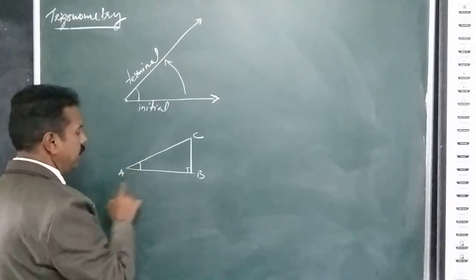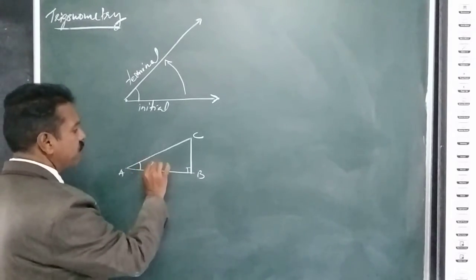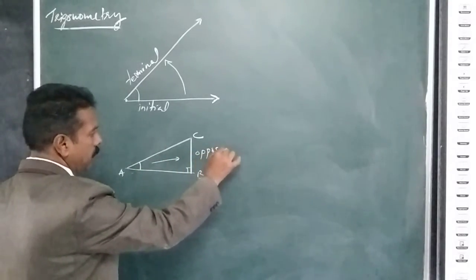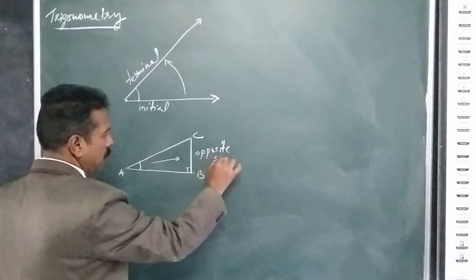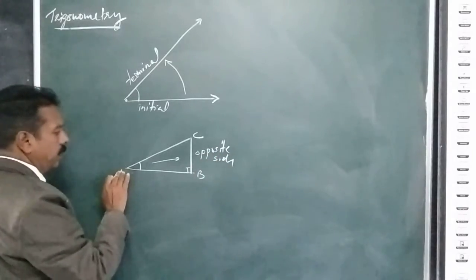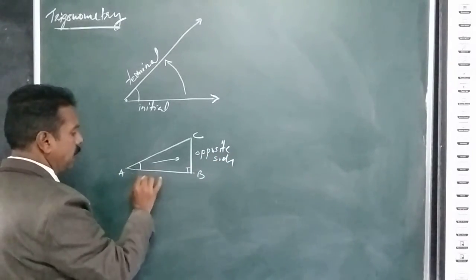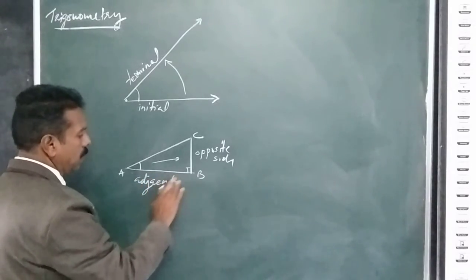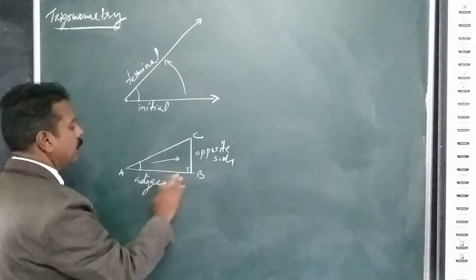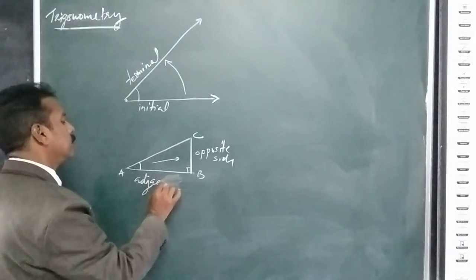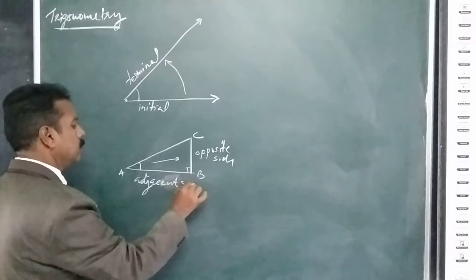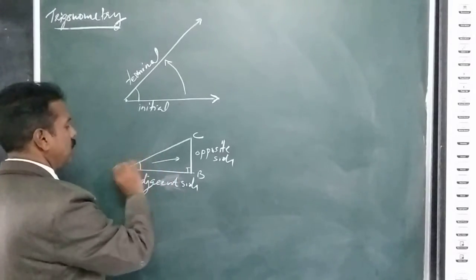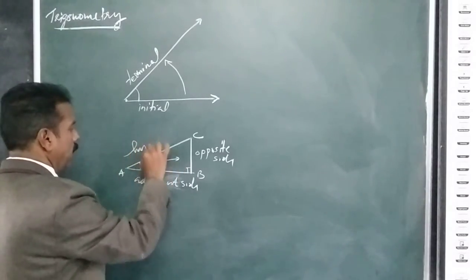The angle is called angle A. The opposite side of angle A is the opposite side. The side nearer to the angle is the adjacent side. The longest side — the side opposite to the 90-degree angle — is called the hypotenuse.